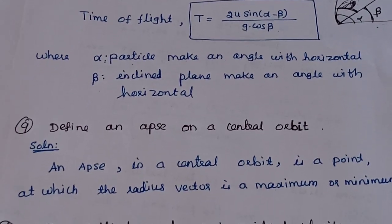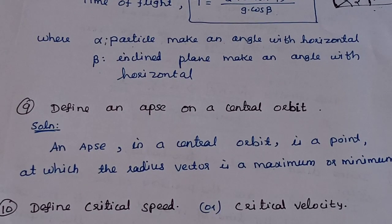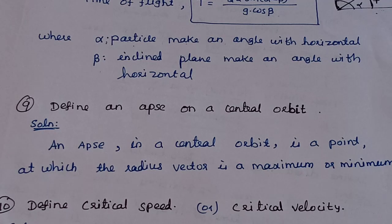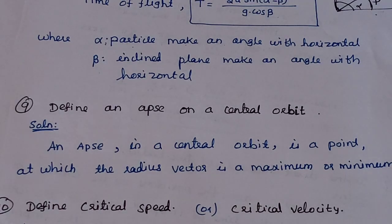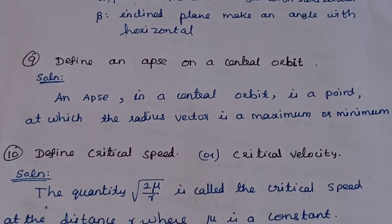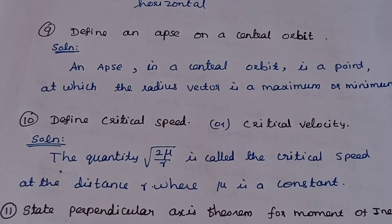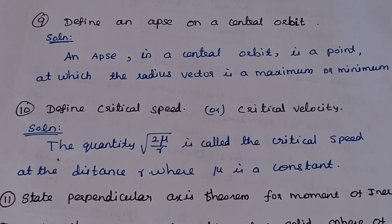Define an apse in a central orbit. An apse in a central orbit is a point at which the radius vector attains a maximum or minimum value.